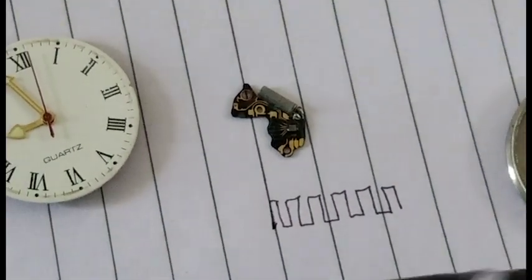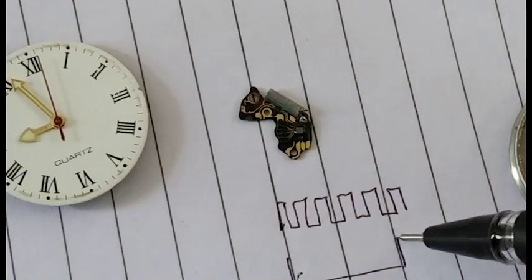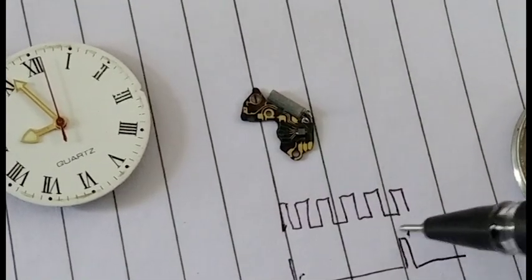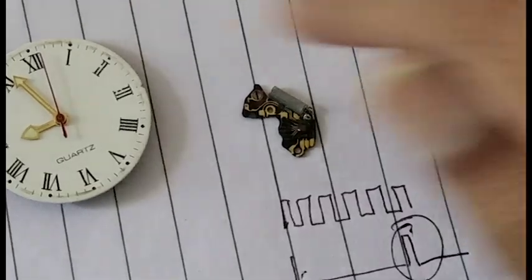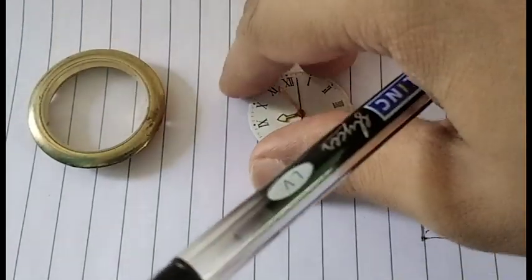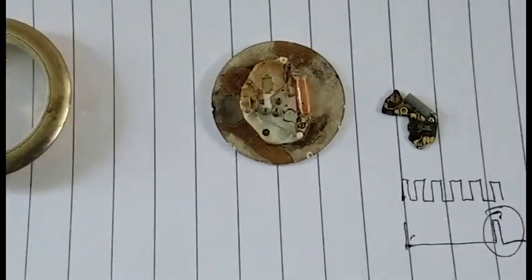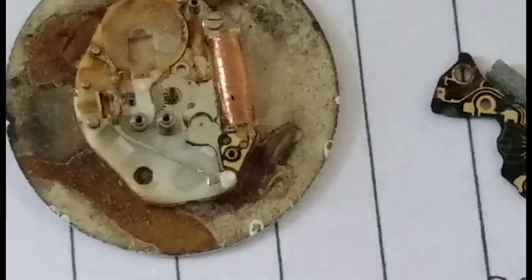So after getting divided it provides a pulse after one second. This pulse is provided to this coil. You can see this coil. This is the electromechanical part.